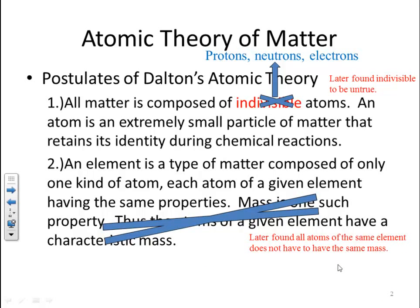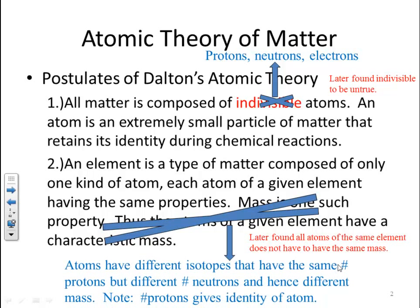All atoms of an element are identical; however, mass is not necessarily the same. Atoms have different isotopes that have the same number of protons but a different number of neutrons, and hence a different mass. You must remember that the number of protons gives the identity of an atom. All atoms of a particular species have the same number of protons, but they can have a different number of neutrons and hence a different mass.